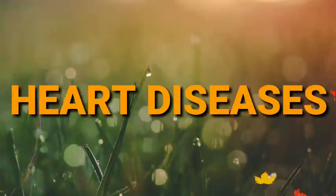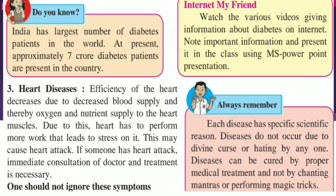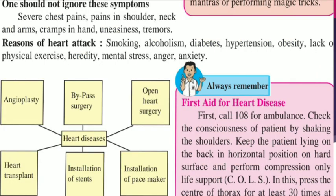Let us move towards heart diseases. The efficiency of the heart decreases due to decreased blood supply, and thereby oxygen and nutrient supply to the heart muscles is reduced. Due to this, the heart has to perform more work, leading to stress on it, which may cause a heart attack. If someone has a heart attack, immediate consultation of a doctor and treatment is necessary. Symptoms include severe chest pain, pain in the shoulder, neck and arms, cramps in the hand, uneasiness, and tremors.